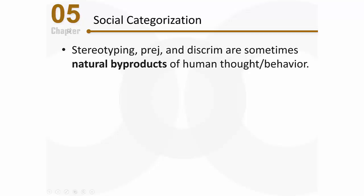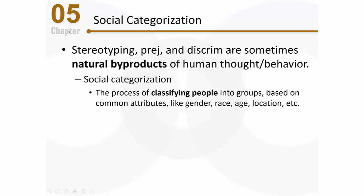Let's talk about social categorization first. It's important to understand that stereotyping, prejudice, and discrimination are sometimes natural byproducts of human thought and behavior. We aren't perfect people — we aren't perfect electrochemical machines. In an effort to be brutally efficient, our minds and bodies sometimes lead us into trouble, and social categorization would be a prime example of that.